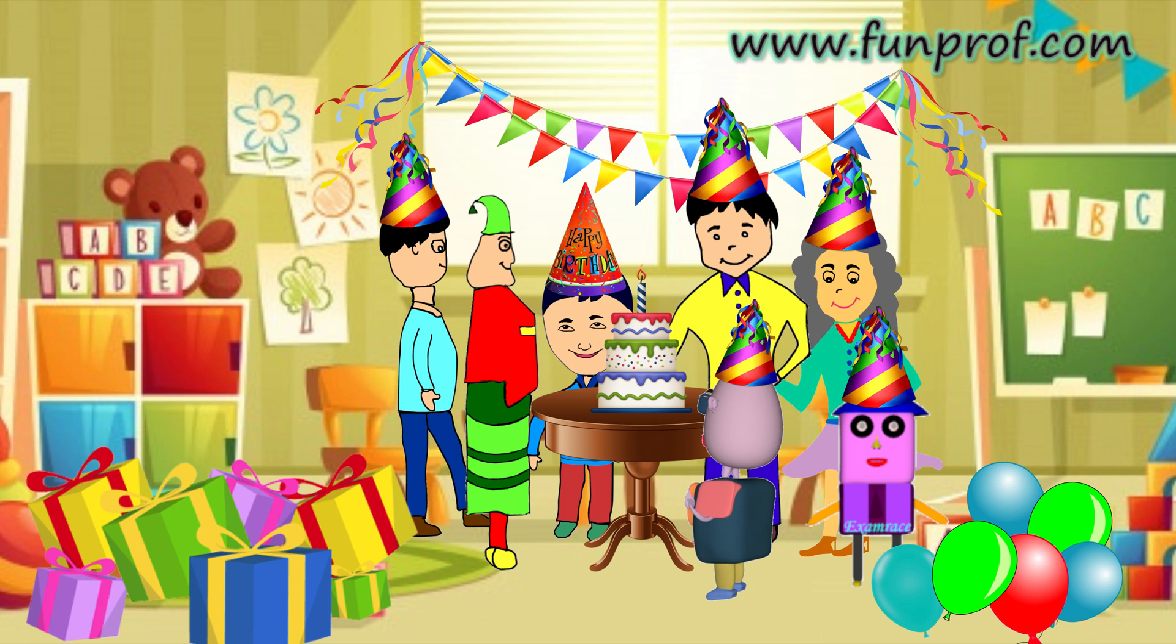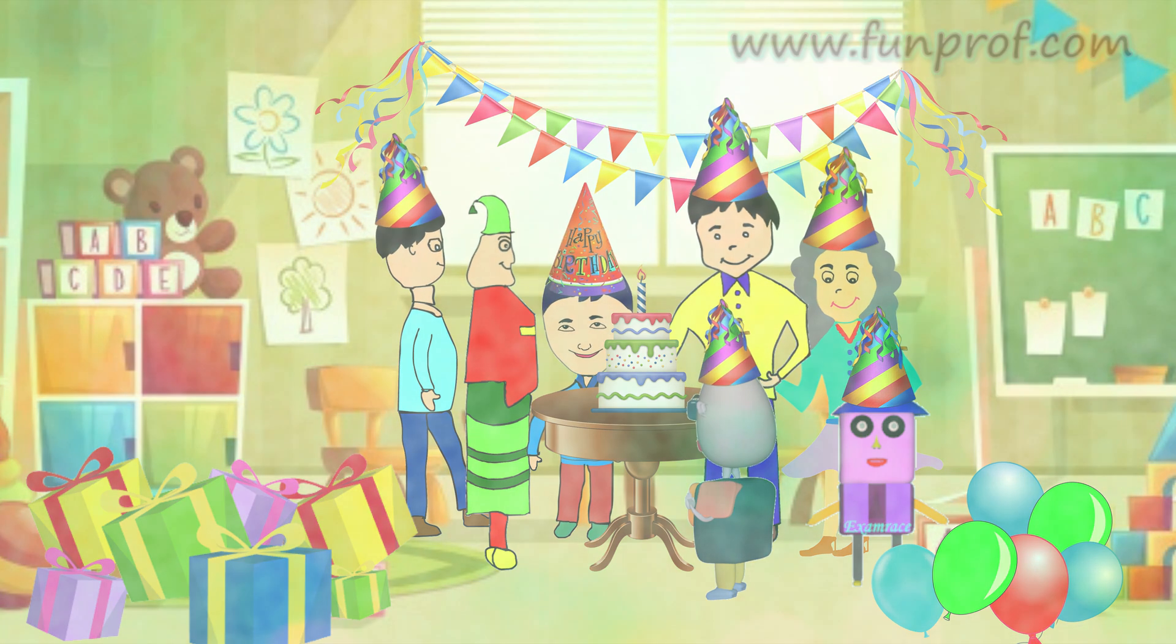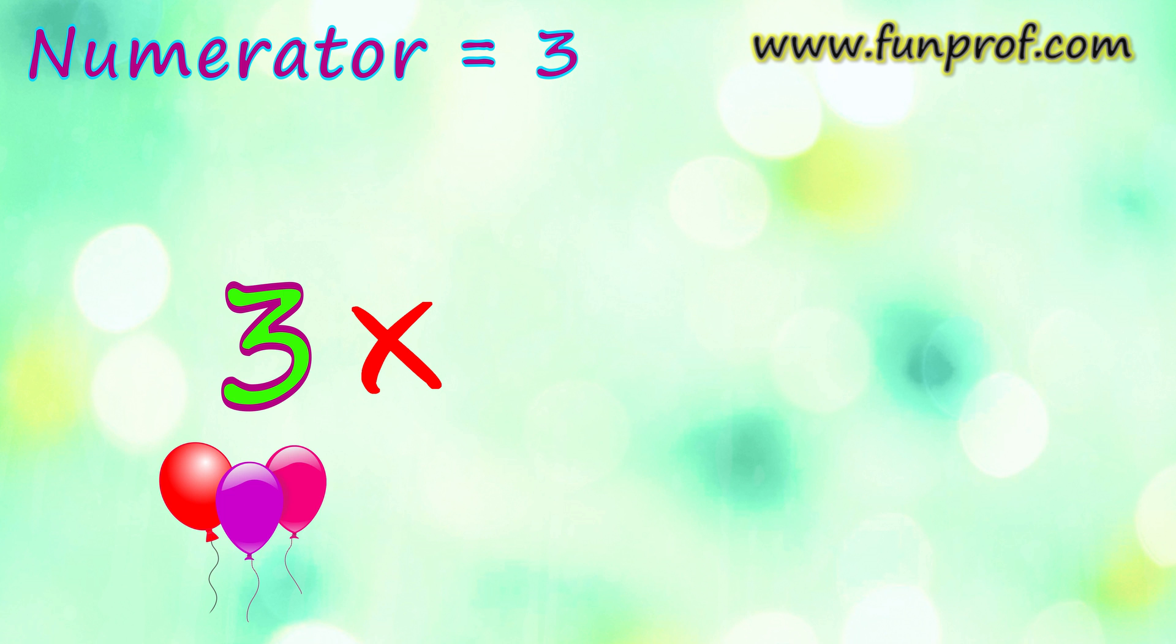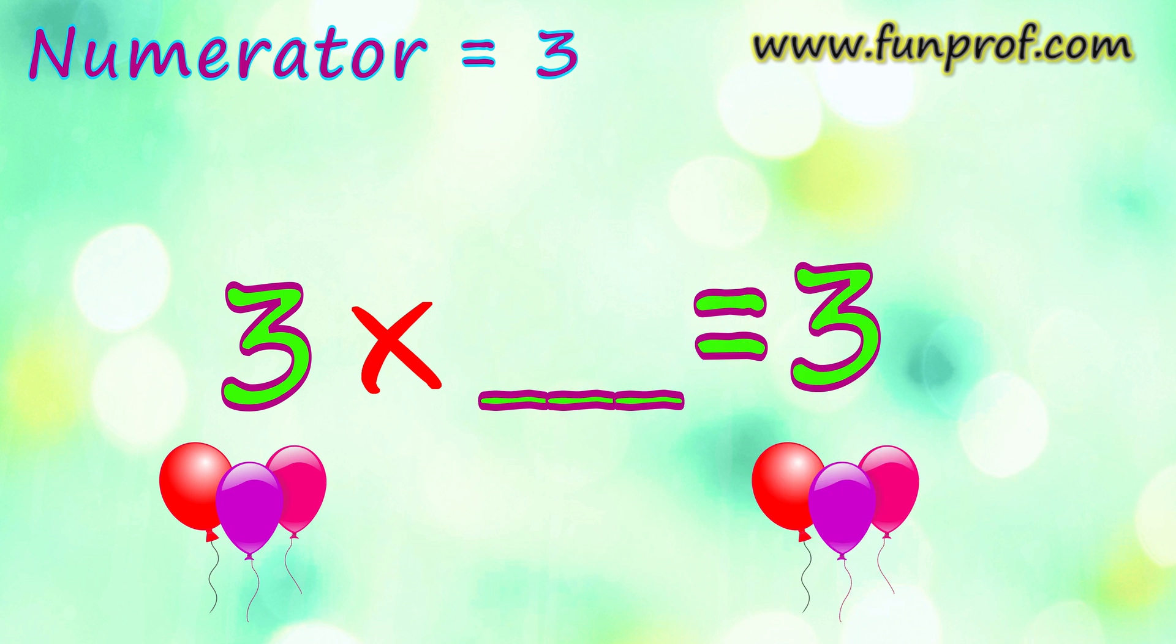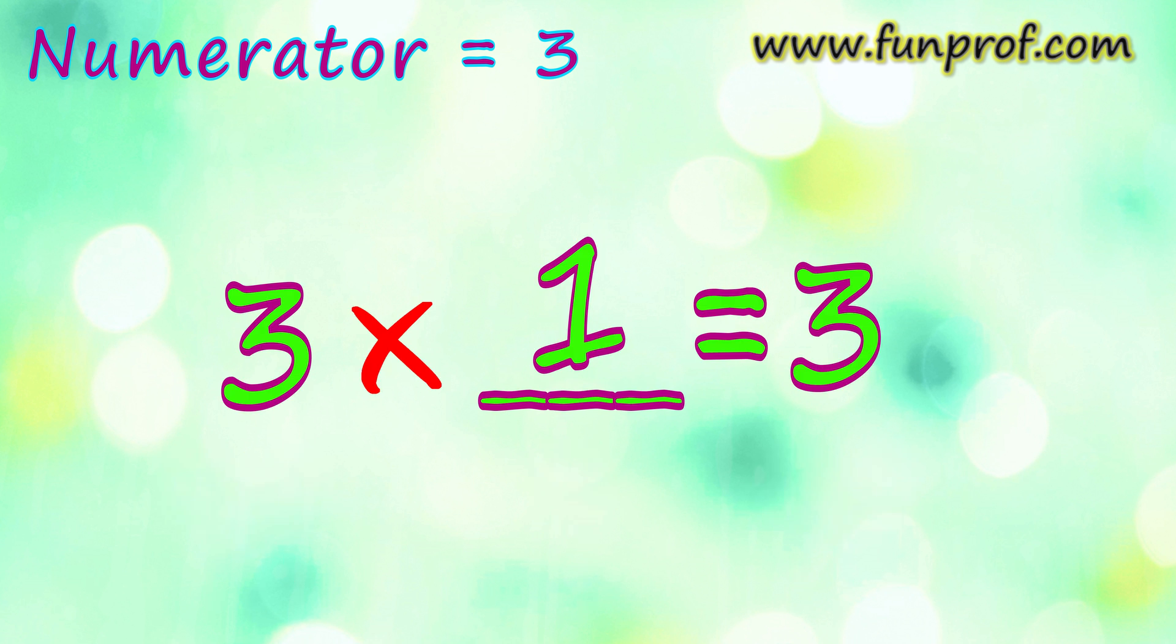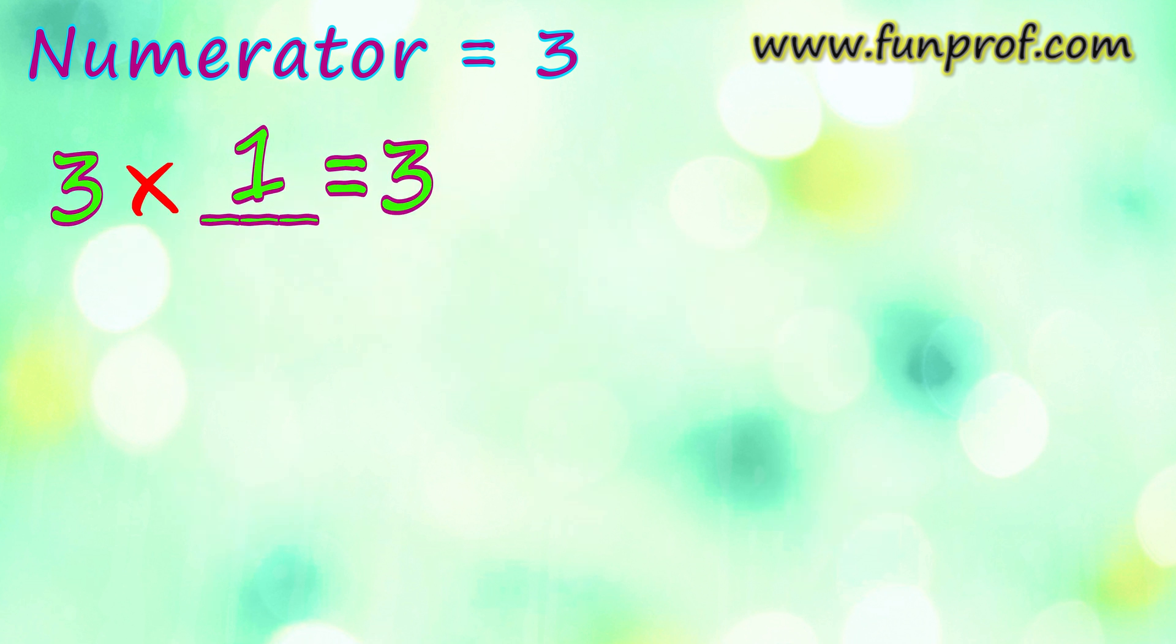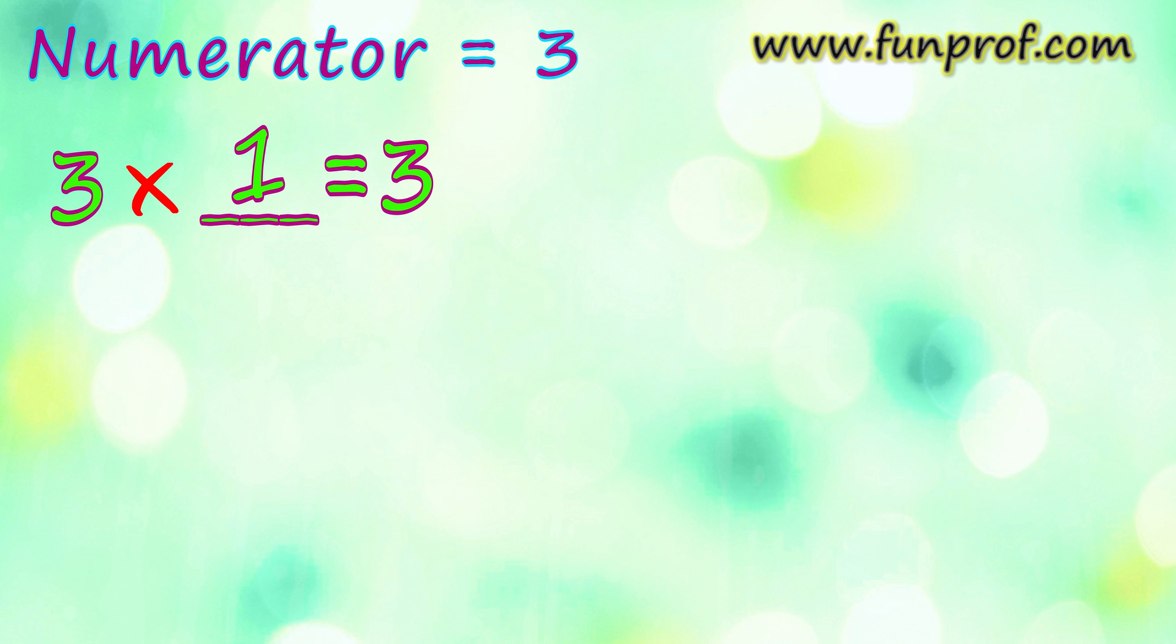But how to make it? Can you tell me? Yes! Of course! I will tell you. The numerator is 3, so we will multiply a number with 3 that becomes 3 itself. So, we will multiply 1 with it. 3 into 1 is equal to 3. So, the 3 will be the same.